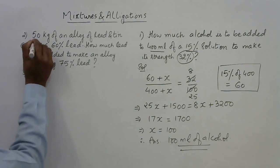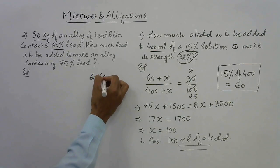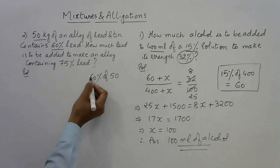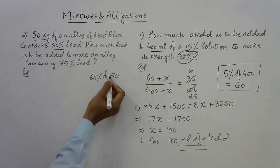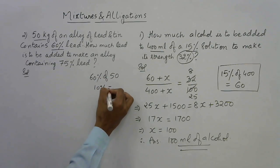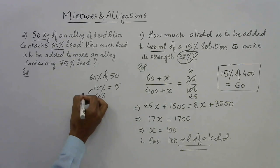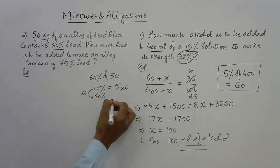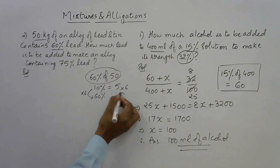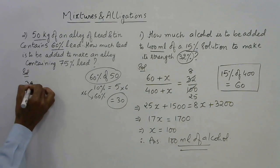For question 2, we have 50 kg and the first percentage is 60 percent. Let's find 60 percent of 50: 10 percent of 50 is 5, and multiplying by 6 gives 30. So 60 percent of 50 is 30. This 30 is the amount of lead, and it is to be increased by adding x kg of lead to a total of 50 + x kg.